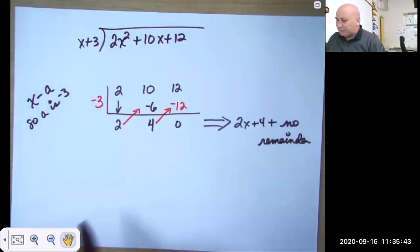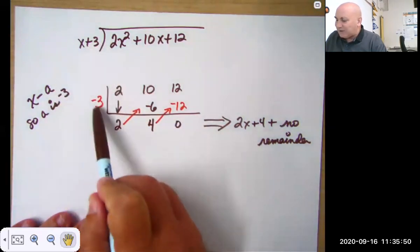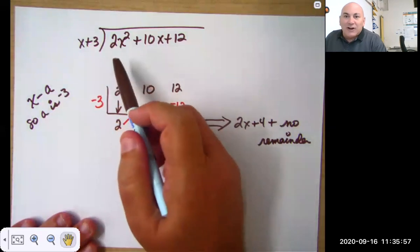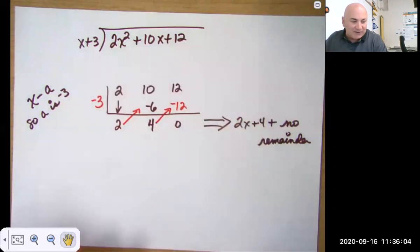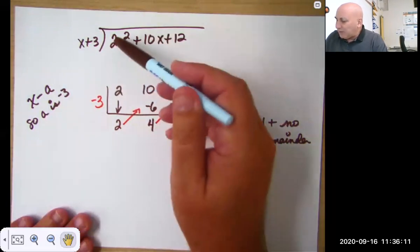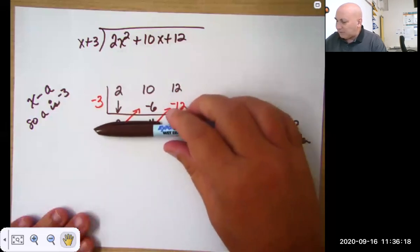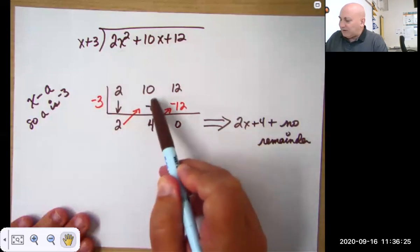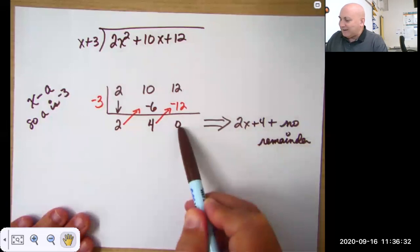Here's the same problem we did before. I said it's got to be x minus a. So if we're dividing by x plus 3, our a value has to be negative 3. And then you just use the coefficients, making sure that you've accounted for every power of x. Here's x squared, x to the first, x to the zero. So we aren't missing anything. So I bring down the 2, the 10, and the 12. Now if I do my division, I start here. So I bring down the 2, and I go negative 3 times 2 is negative 6, and I add, get 4. Four times negative 3 is negative 12, and I add and get 0.